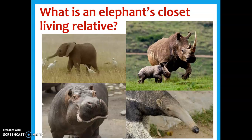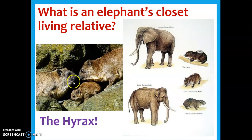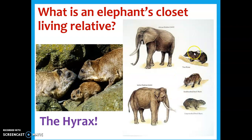Moving on — if you had to pick an elephant's closest living relative, like we compare humans and chimps, what would you choose? A hippo? A rhino? A giant anteater? It's actually none of those — it's this tiny rodent-like creature called the hyrax. Comparative anatomy suggested otherwise, but when we started sequencing DNA, we had to redraw our evolutionary maps. These two turn out to be very closely related. The San Diego Zoo even has a whole exhibit on it. Elephants and hyraxes both mammals — elephants just lost their fur and got enormous.